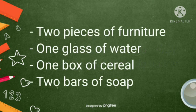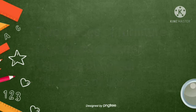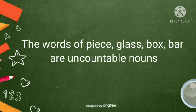For example, two pieces of furniture, one glass of water, one box of cereal, two bars of soap. The words piece, glass, box, bar are countable nouns.